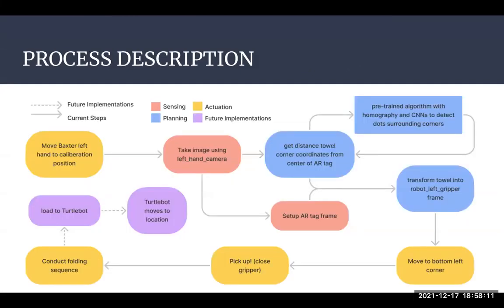Yeah, for the actual implementation of this folding, we first moved Baxter's left hand to a calibration position so that we could take a picture using its left hand camera. Then, as we talked about, it detected the location of the AR tag, the corners of the AR tag with respect to the gripper frame. And with our pre-trained neural network, it identified the corners and detected the dots surrounding the towels. It transformed these locations of the towel corners into the frame of the left gripper. This allowed us to compute inverse kinematics so that we could position the gripper appropriately in order to conduct a folding motion.